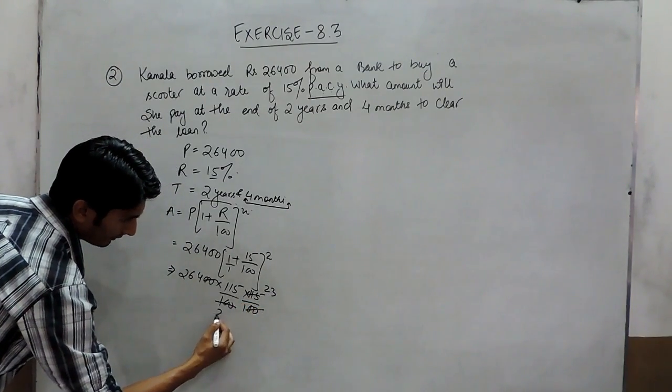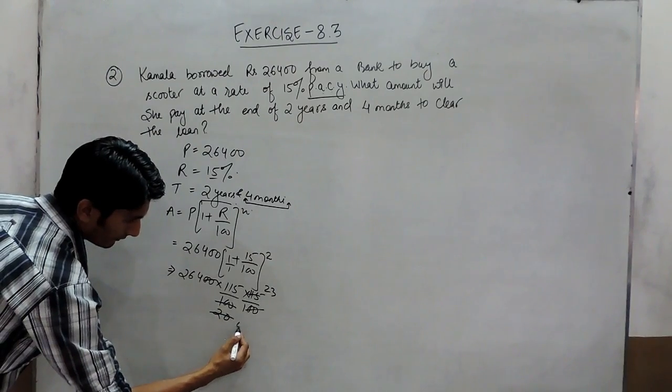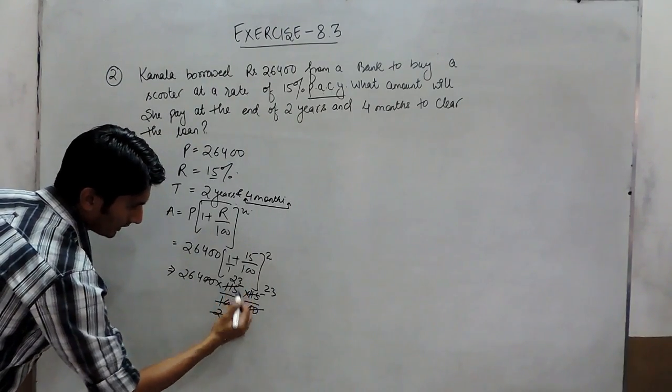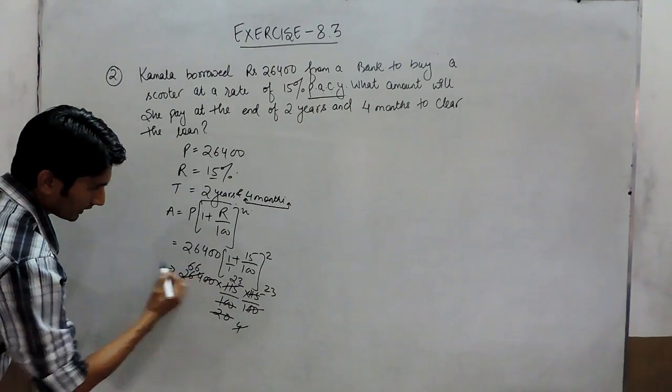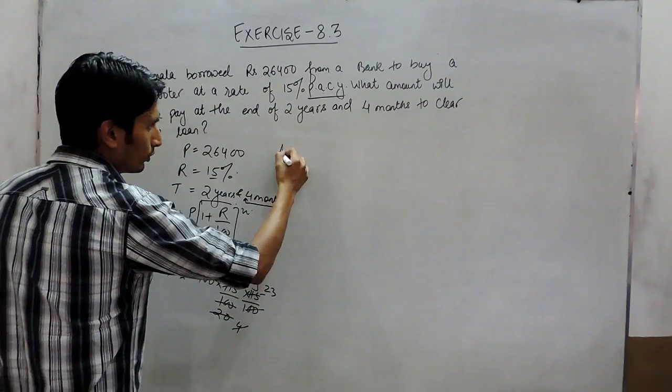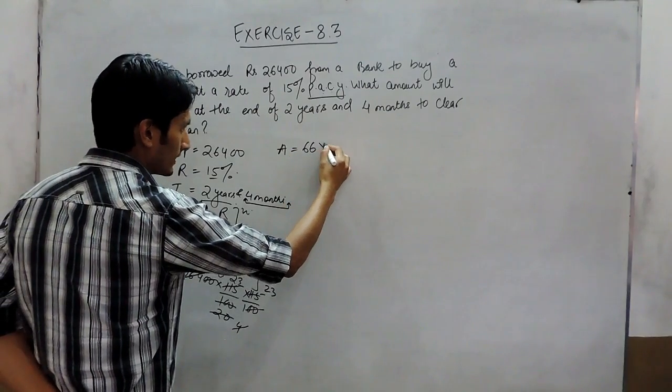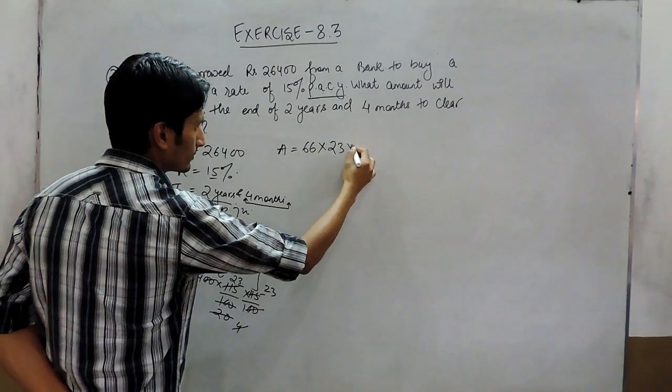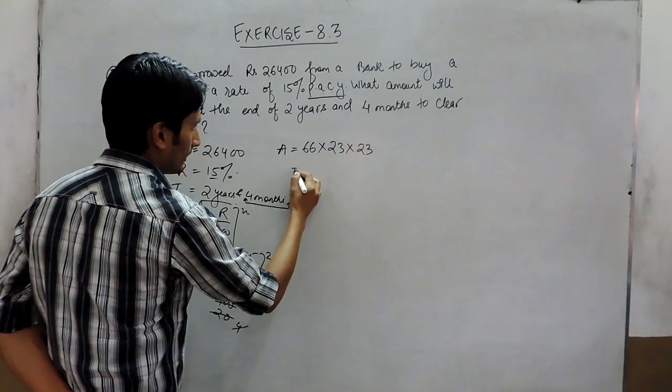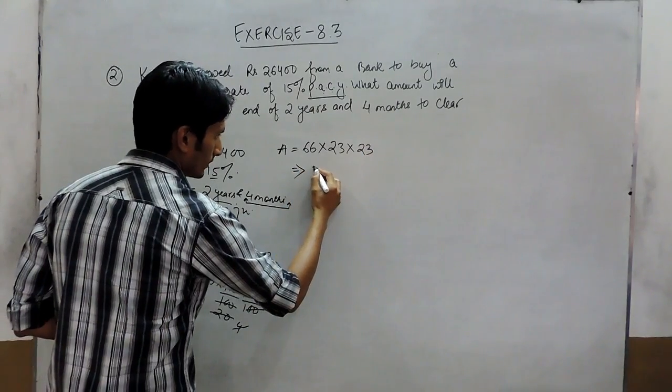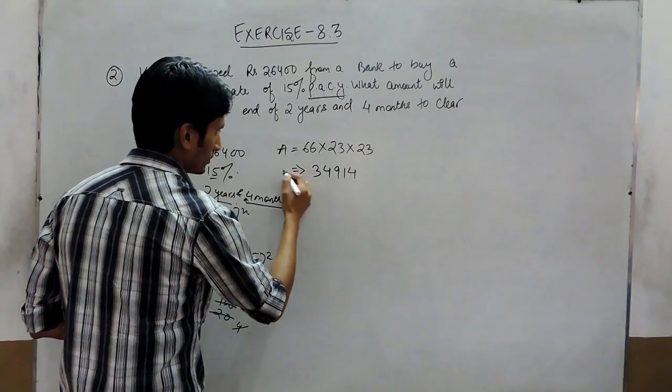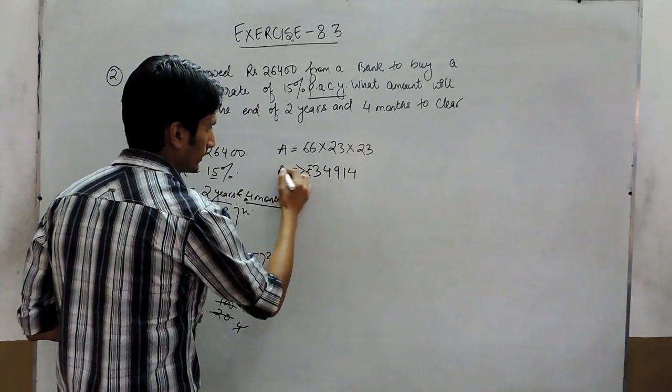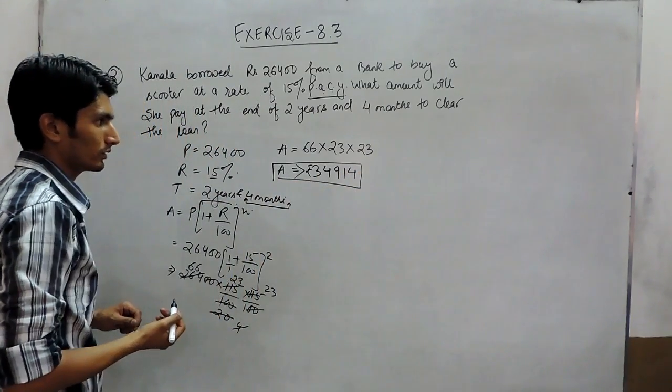Continuing: 5, 3, 5, 20, this is 5, 4. This is 23, and after cancellation, this is 66. The amount equals 66 multiplied by 23. After simplification, the amount will be 34,914.